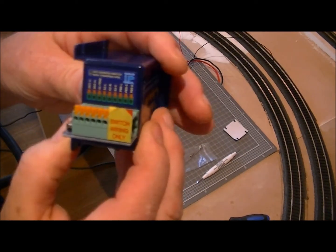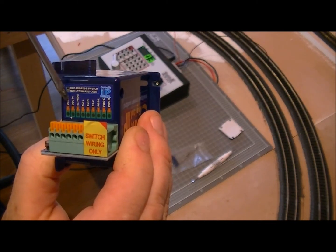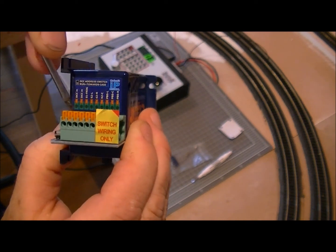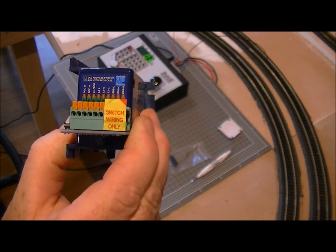On the point motor, you see there, let me get a pointer. You see here, DCC in, DCC in, frog. Beautiful thing these. No soldering. They're just press. Put the wire in there, press that, slips in, clamps on. Beautiful.